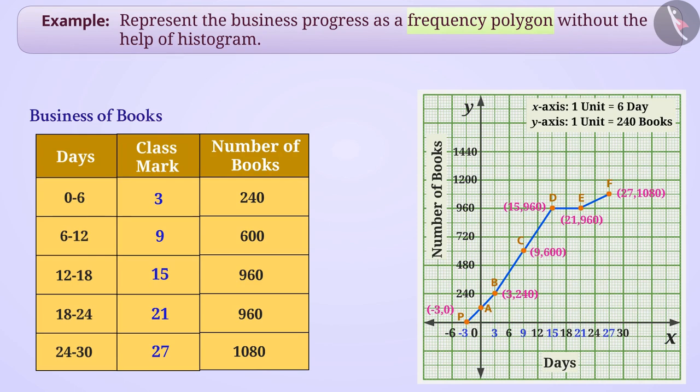Similarly, suppose that even after the class interval 24 to 30, the class interval with 0 frequency is 30 to 36 whose class mark is 33 which we will represent as G of 33 and 0 on x-axis. Now, we will connect point F and point G by line segment.